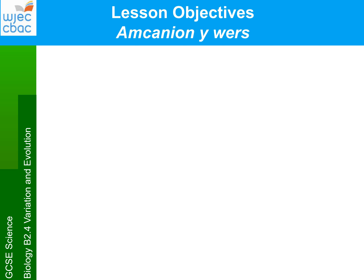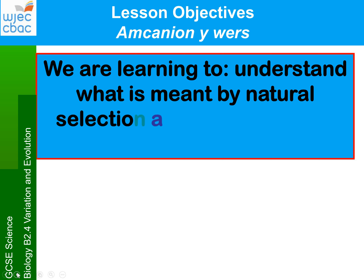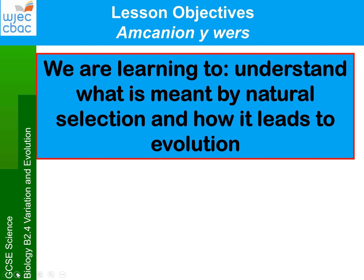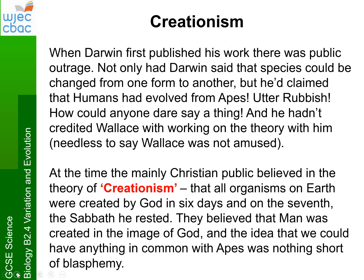Hello Year 11, this is Lesson 7 in this booklet, B2.4, Variation and Evolution. The next three lessons all link together. I'm going to split them up into theories of evolution today, touching a little bit on natural selection, a separate lesson on natural selection, and then a lesson about Charles Darwin, his research, work and impact. Today's lesson objective is learning to understand what's meant by natural selection and how it leads to evolution, and how we came about this theory through other theories. Please turn to page 28 in your booklet, and we're going to look at three theories on evolution.